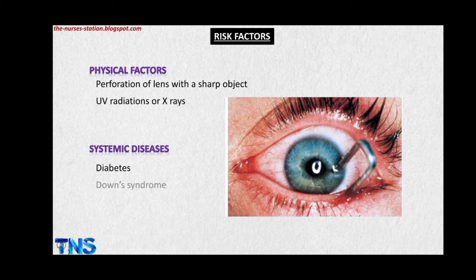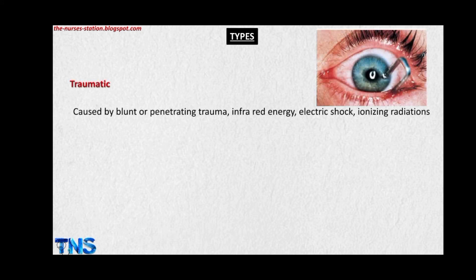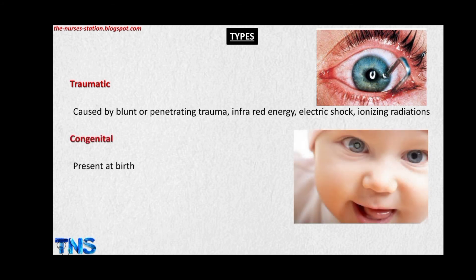Systemic diseases which increase the risk of cataract include diabetes, Down syndrome, and renal diseases. There are various types of cataract, but the main three types include the traumatic type, caused by blunt or penetrating trauma, infrared energy, electric shock, or ionizing radiations; the congenital type, which is present from birth; and the senile type, which is age-related.